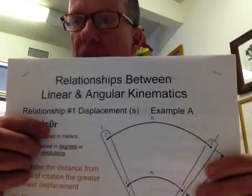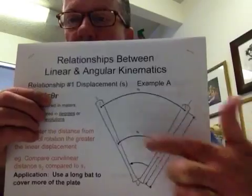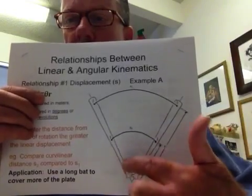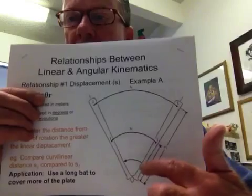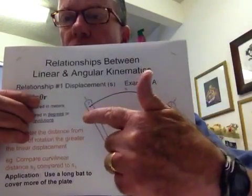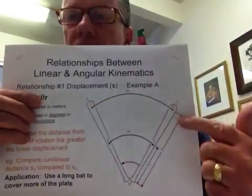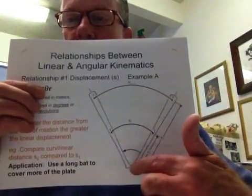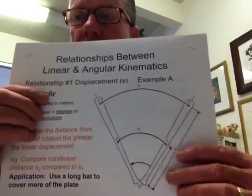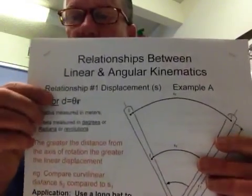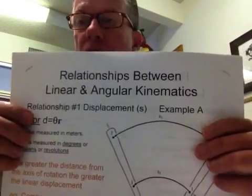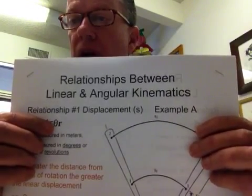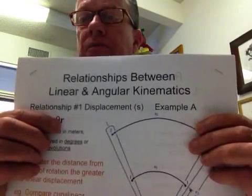Displacement equals theta — the angle of movement — and this angle is held constant. Wherever you put your protractor or goniometer, you're going to get the same angle. The linear displacement is greater where the radius of rotation is longest. With a shorter radius, the displacement is different. So displacement equals theta times radius: you get a bigger displacement if you have the same angle but a longer radius.